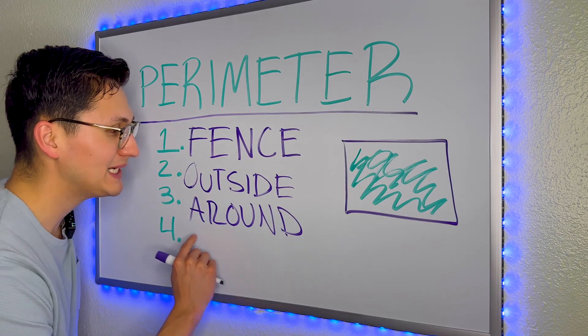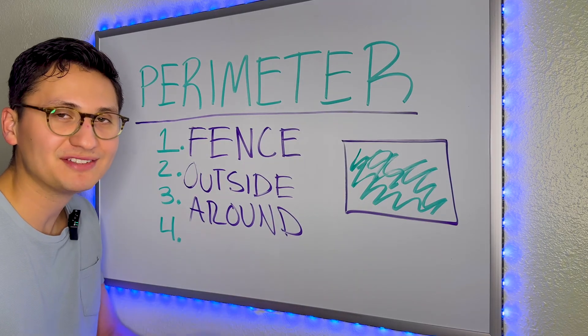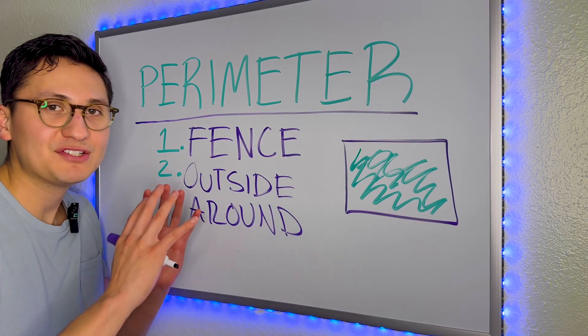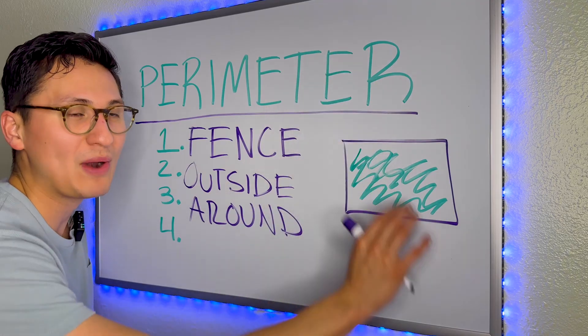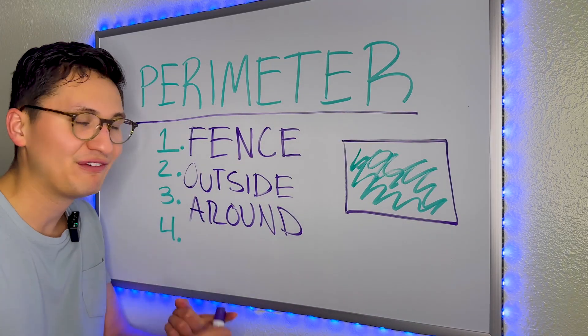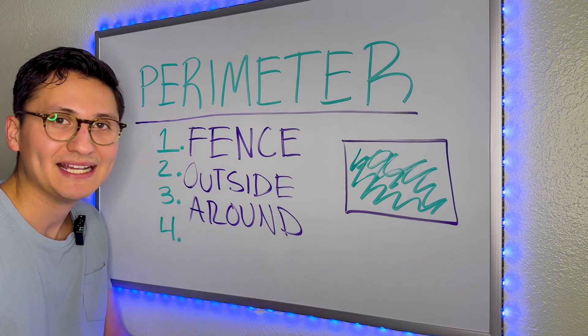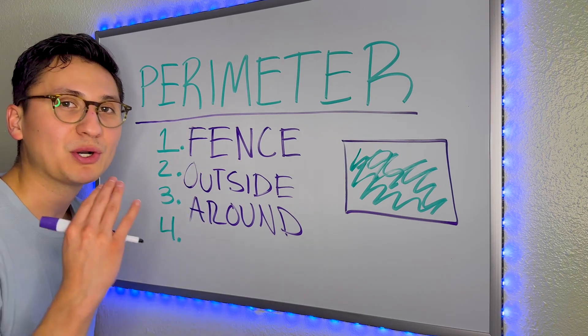The third word is going to be around. Typically in a lot of questions, I've noticed that they say something like, this school has a playground and they want to put a fence around the playground. Whenever they say anything like fence, like outside, like around, that means they're asking for the perimeter.